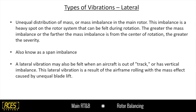Lateral vibration is an unequal distribution of mass — a mass imbalance in the rotor head. The imbalance is a heavy spot in the rotor system felt during rotation. The greater the mass imbalance, or the further the mass imbalance is from the center of rotation, the greater the severity — also known as a span imbalance. A lateral vibration may also be felt when an aircraft is out of track or has a vertical imbalance; they all affect each other.